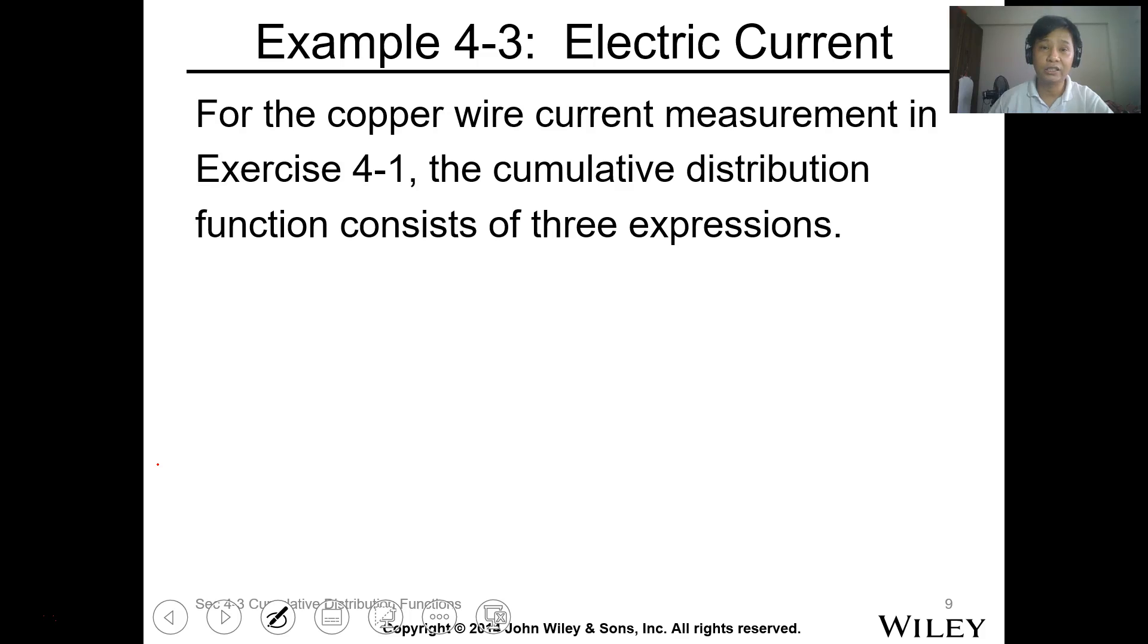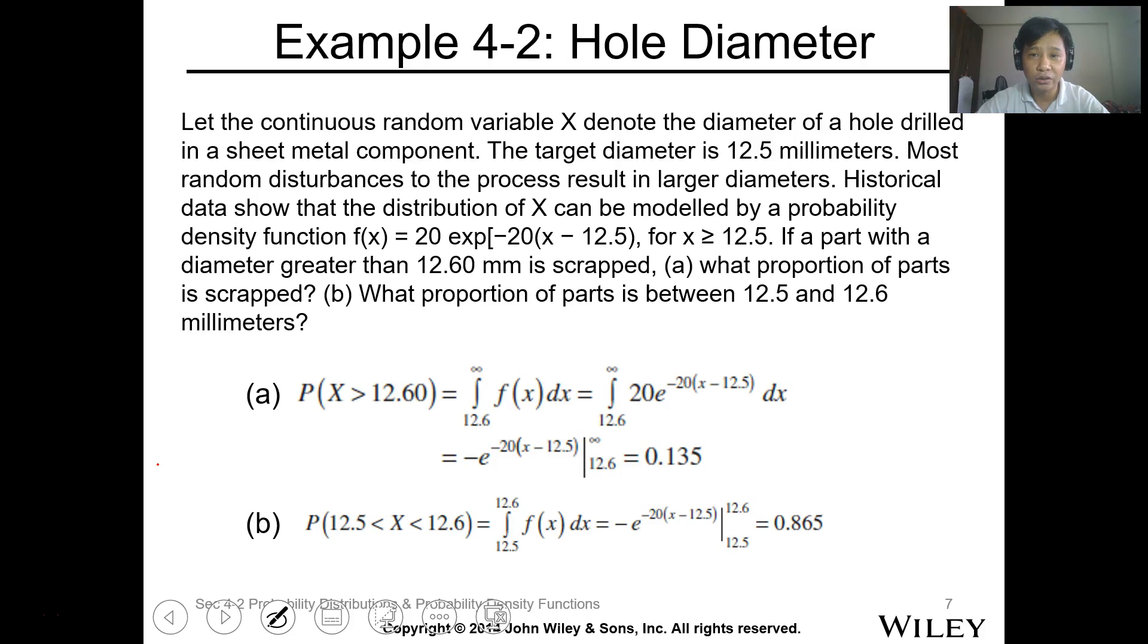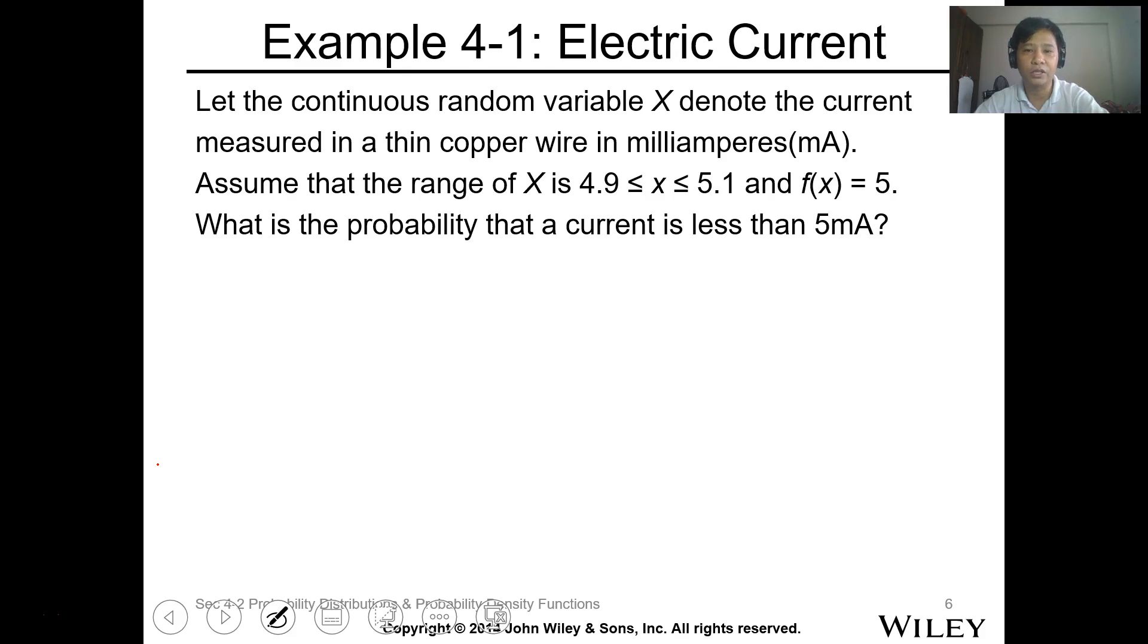So let's have this example, yung electric current natin originally. For the copper wire current measurement in exercise 4.1, the cumulative distribution function consists of 3 expressions. So tingnan natin ulit yung sa copper wire. The f of x is 5 and this is defined at 4.9 to 5.1. So meaning F of X when X is less than 4.9 is 0 and when X is greater than 5.1, 0 din siya.